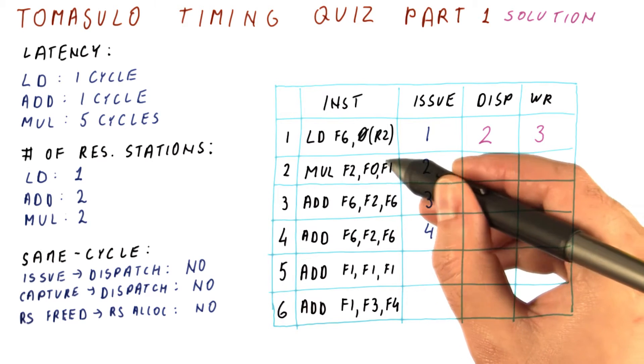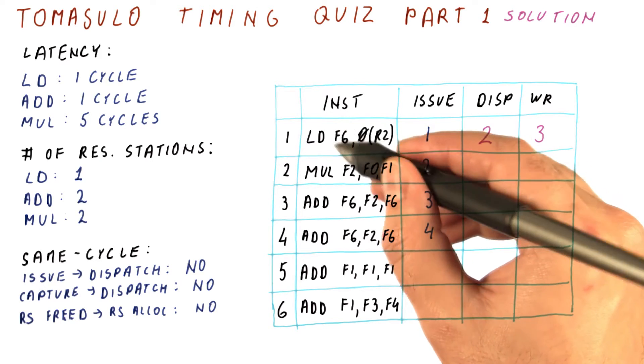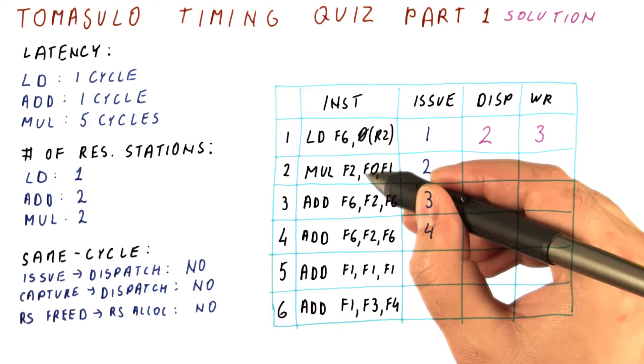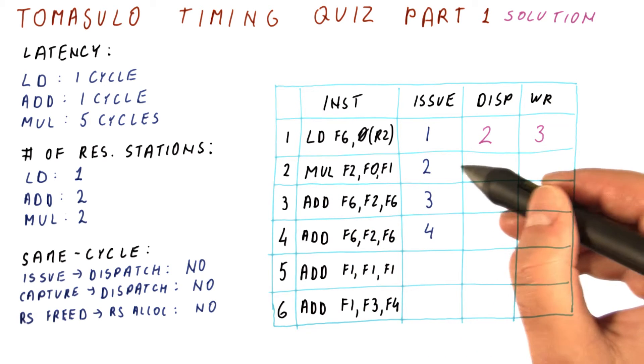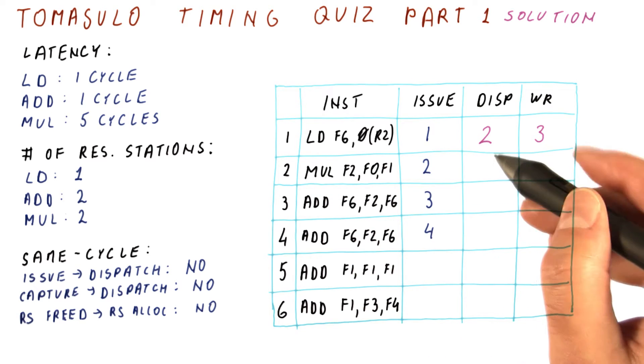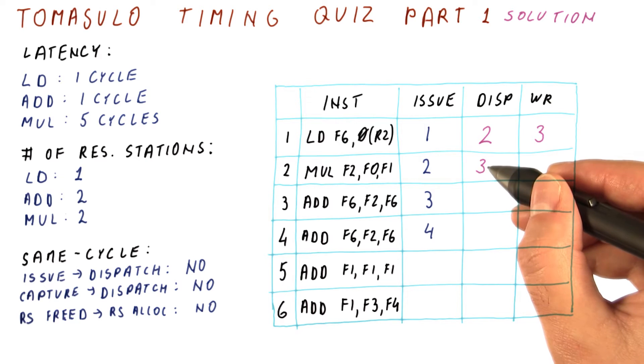Because this multiply instruction doesn't depend on the load here, it uses F0 and F1, and the load produces F6. That means this instruction has all the operands ready as soon as it issues, so it can dispatch in cycle three.